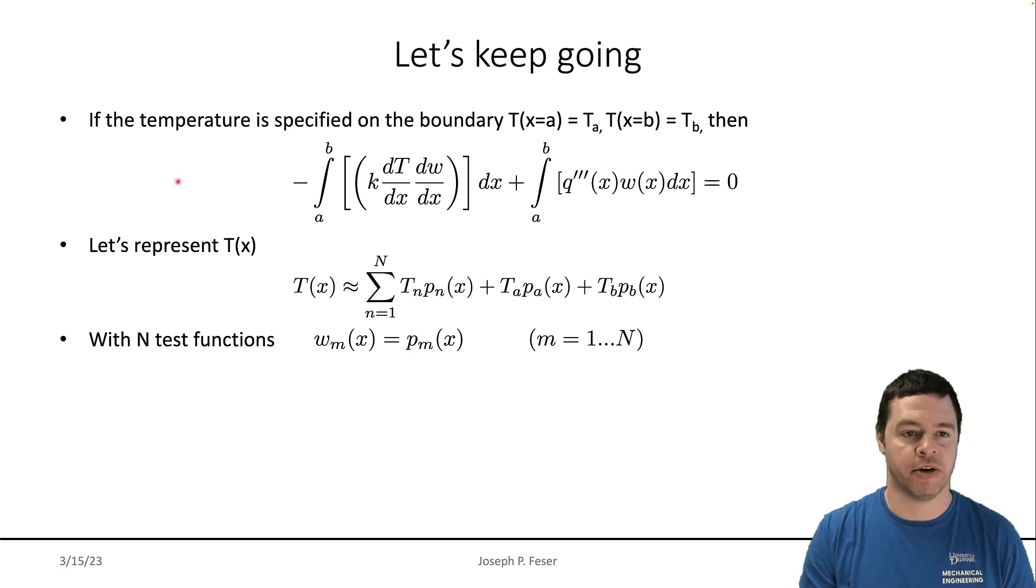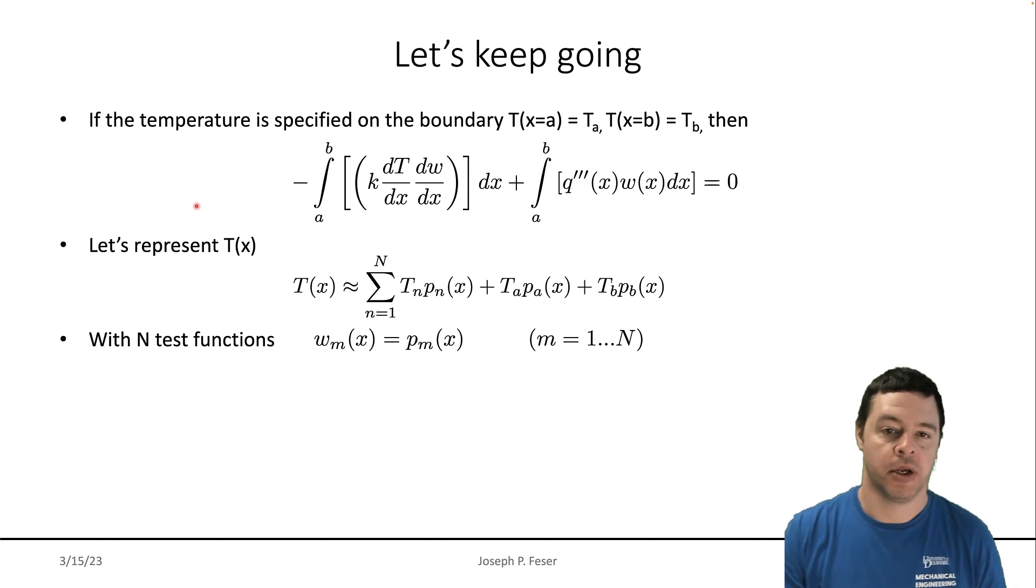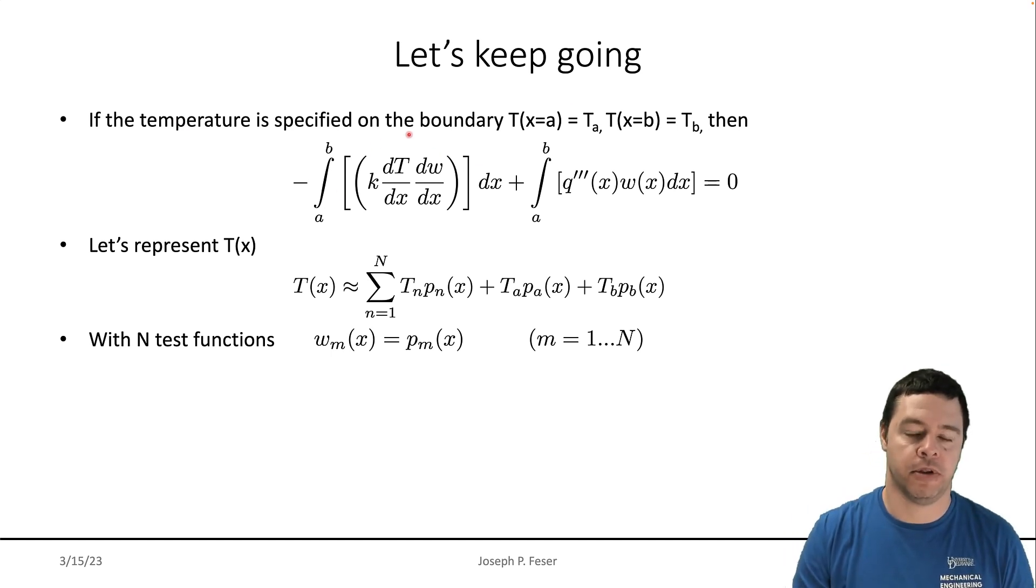What we discovered is that the weak form in that situation, if I'm using the test functions that go to zero on the boundaries, then that extra boundary evaluation just goes away. We don't have to deal with it. If that wasn't the case, then we'd have to add those as unknowns on the boundaries and keep going.